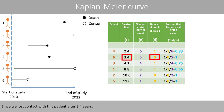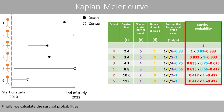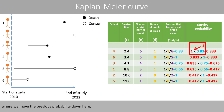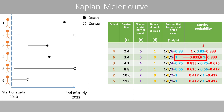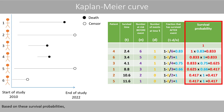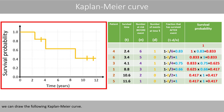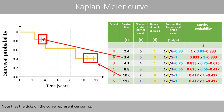Since we lost contact with this patient after 3.4 years, 100% of the individuals are still alive after the observed time for the censoring. Finally, we calculate the survival probabilities, where we move the previous probability down and multiply with the value in the column to the left. Based on these survival probabilities, we can draw the following Kaplan-Meier curve. Note that the ticks on the curve represent censoring.